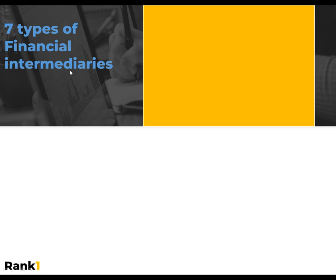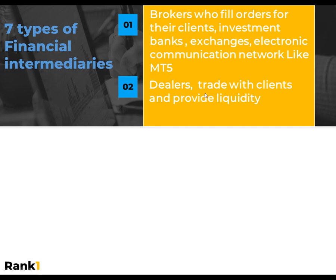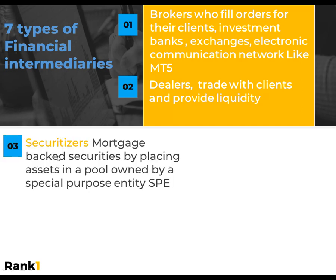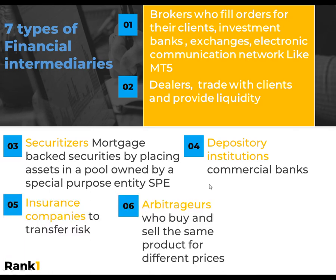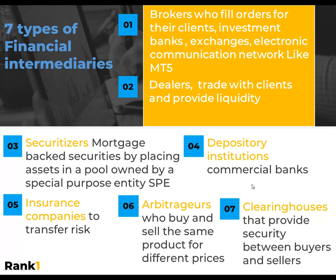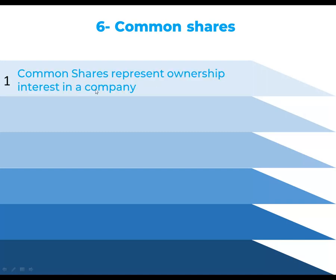Seven types of financial intermediaries: one, brokers; two, dealers — dealers trade with clients; three, securitizers; four, commercial banks; five, insurance companies; six, arbitrators; seven, clearing houses — they provide security between buyers and sellers.